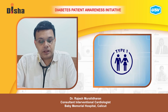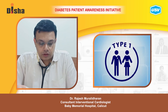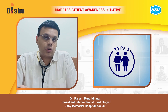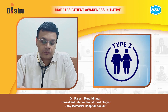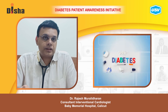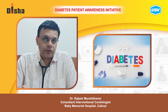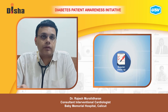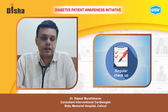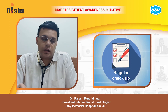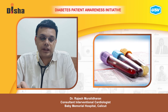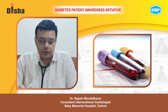Symptoms of type 1 diabetes can start quickly — in a matter of weeks — whereas type 2 diabetes often develops very slowly, over the course of a few years. People may not even notice symptoms for many years until they do a health checkup and find their blood sugar is high. Usually they may have slight symptoms which they pass off as normal, but unless the blood sugar is checked, we will not be able to diagnose diabetes.